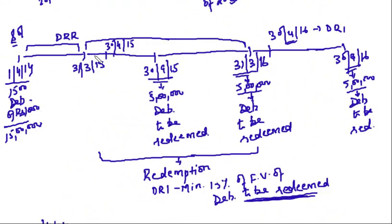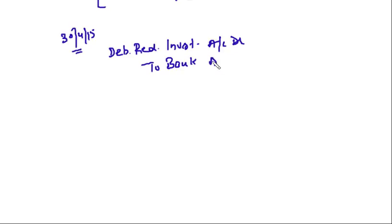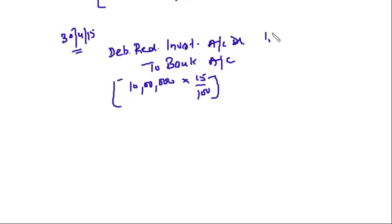Next, we make the investment in specified securities on or before 30th April 2015, since 10 lakh debentures are redeemable in this financial year. The entry is: Debenture Redemption Investment Account Dr. to Bank Account. On 10 lakh debentures redeemable in the current financial year, DRI at 15% = Rs. 1,50,000.